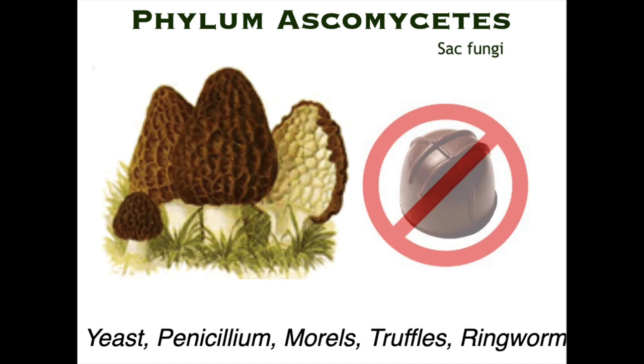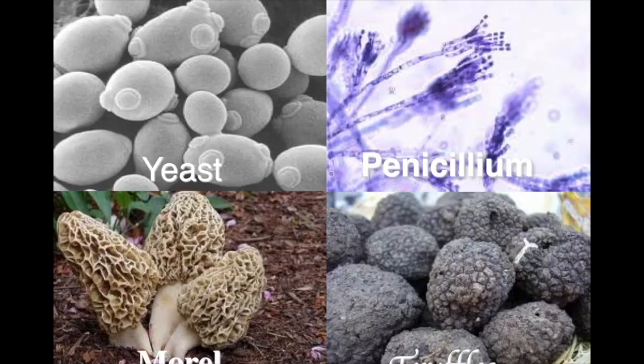When I say truffle, I'm not talking about the chocolate. Ringworm causes athlete's foot — interdigital ringworm would be athlete's foot. Yeast is unicellular and goes through an uneven asexual reproduction called budding — you can see the little buds coming off of it. Binary fission is an even one-to-two division, whereas budding is an uneven asexual reproduction. You can also see penicillin, which is turned into the antibiotic penicillin.